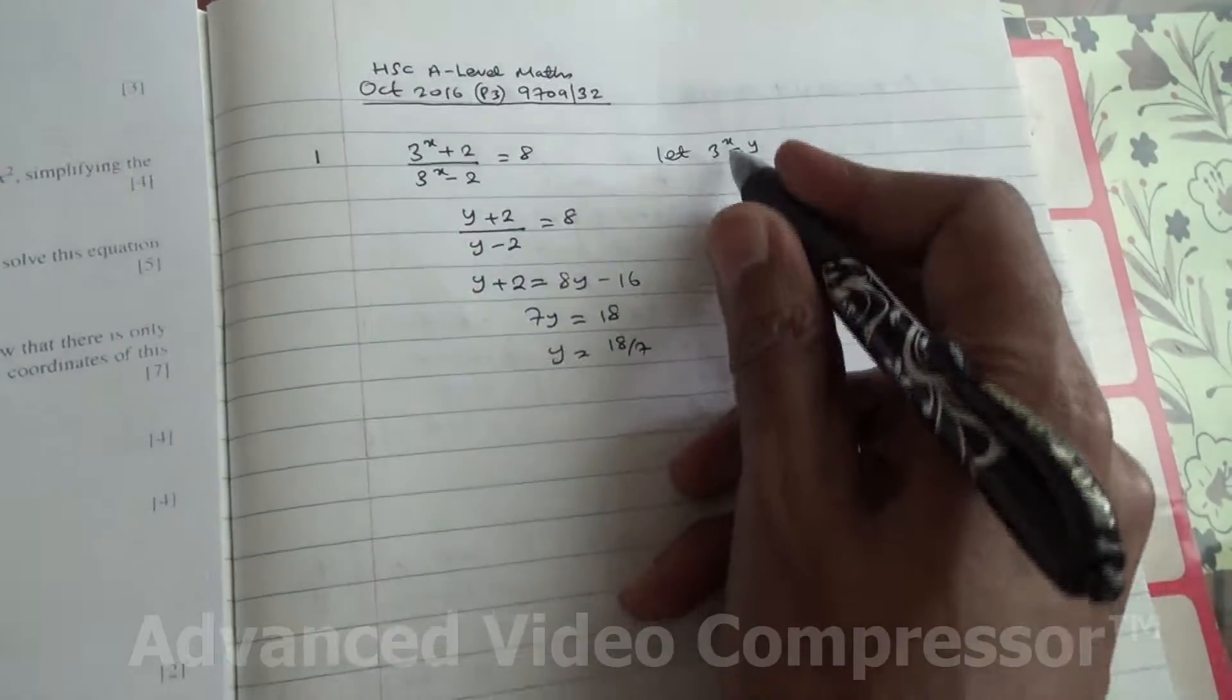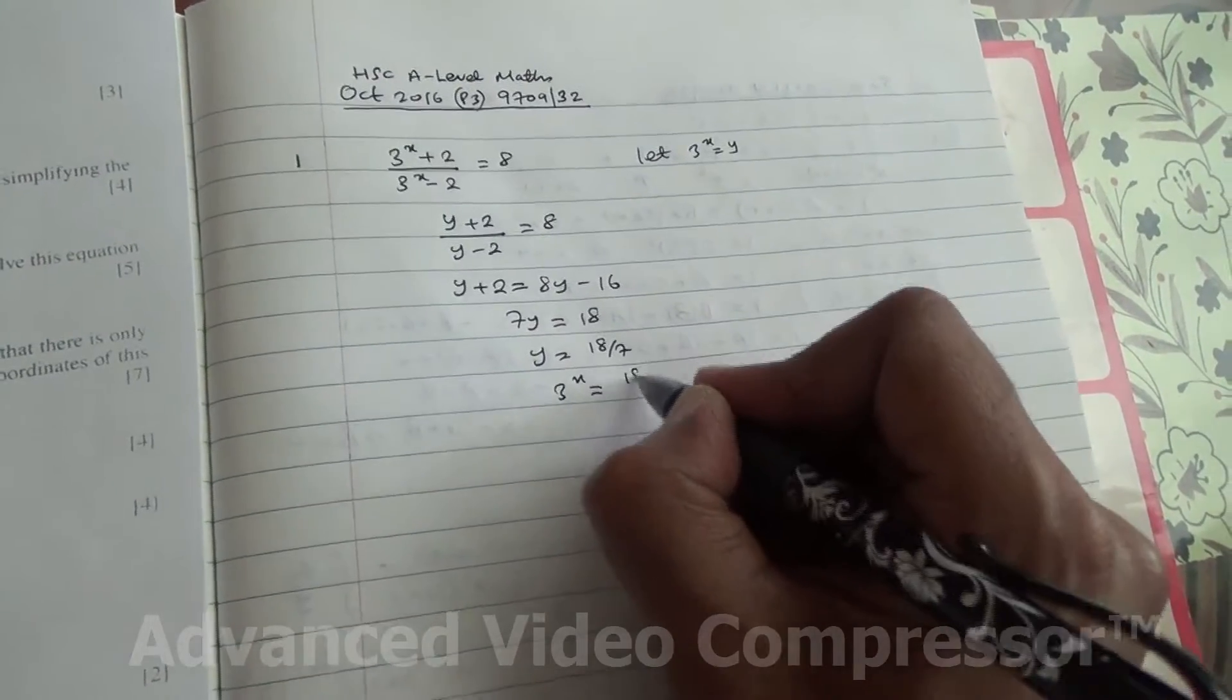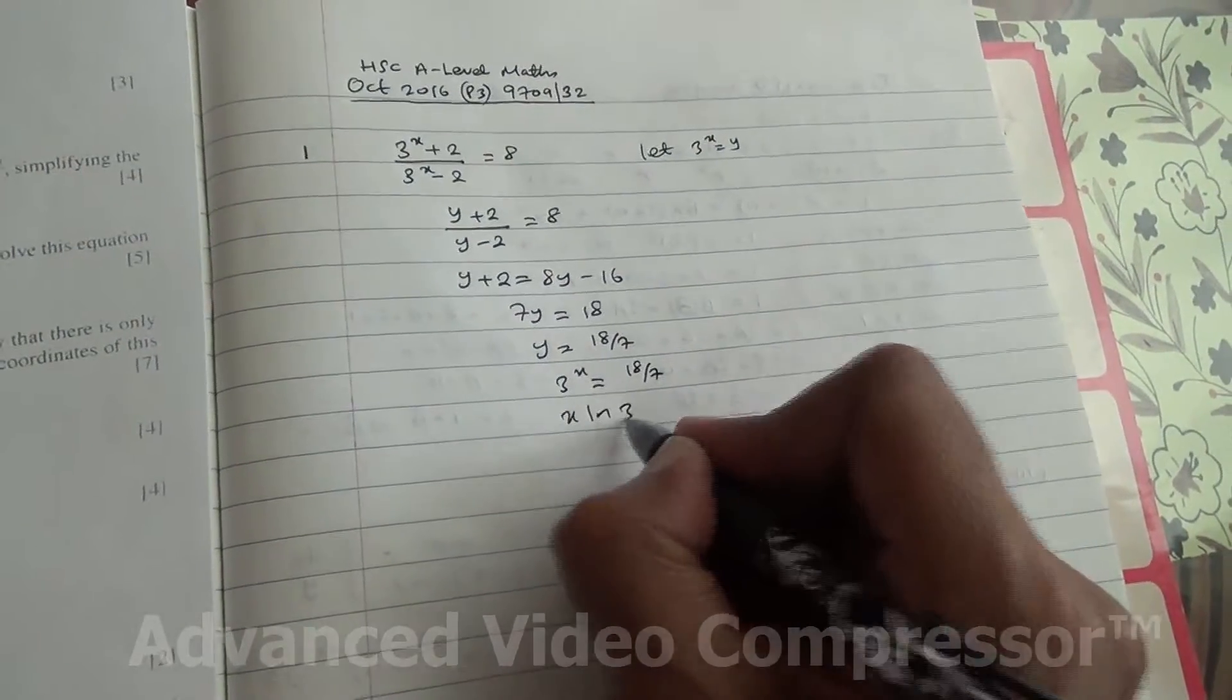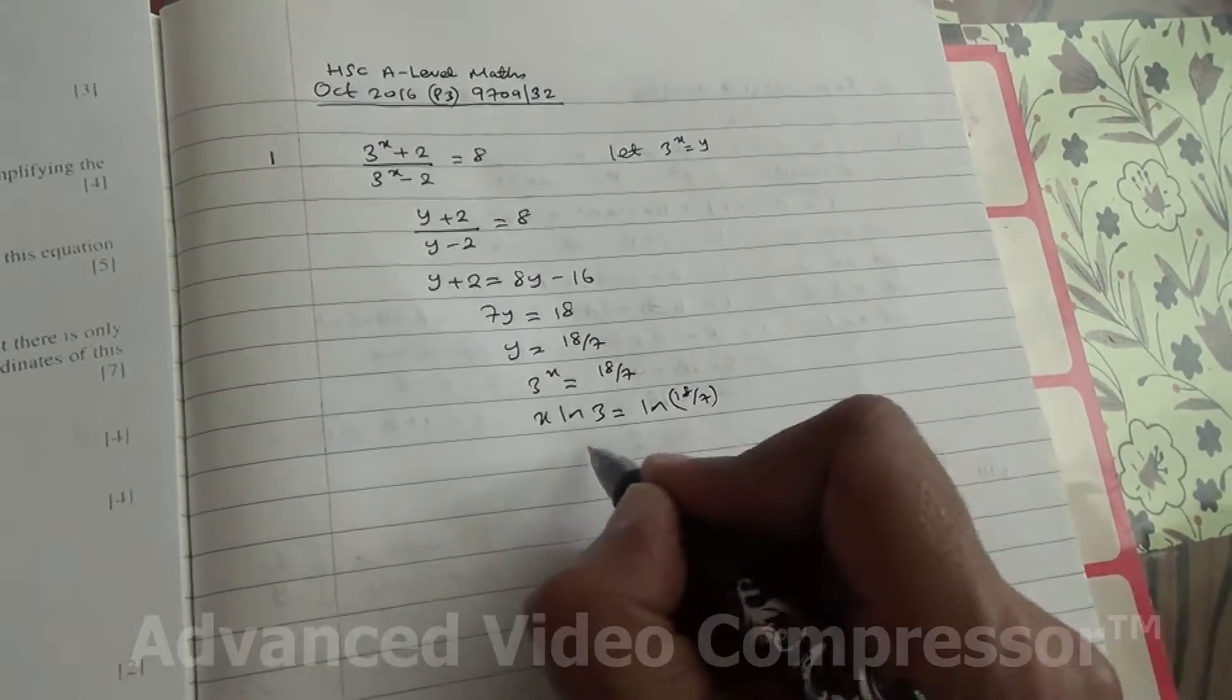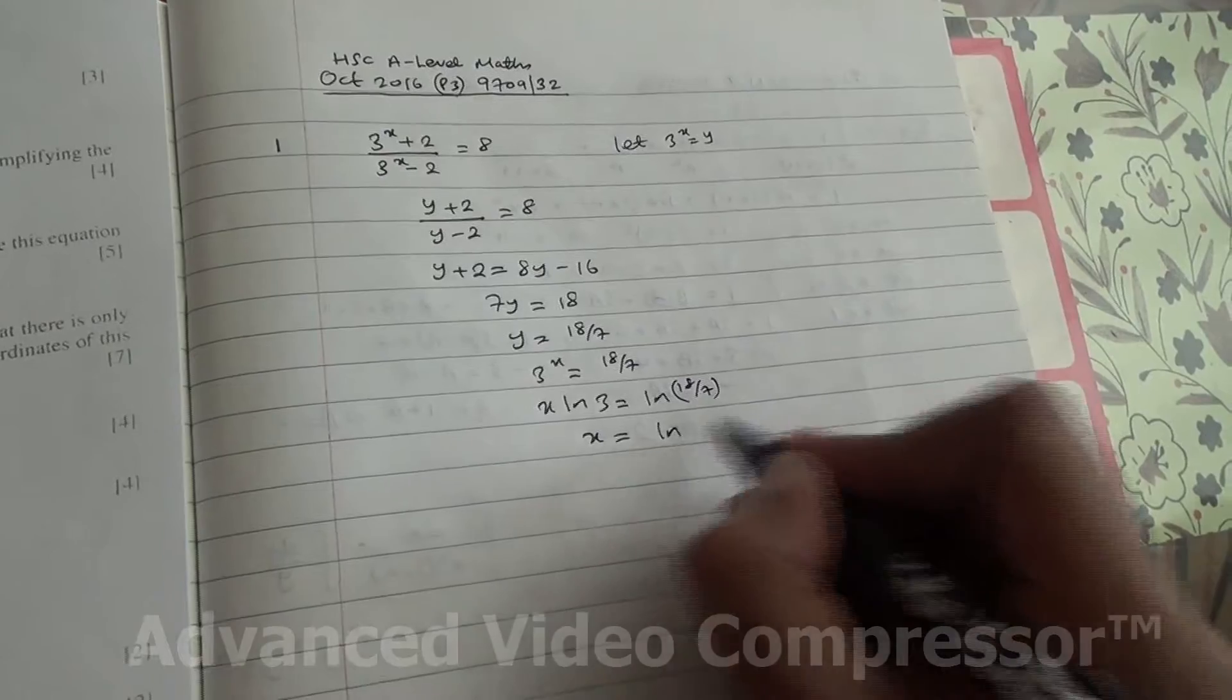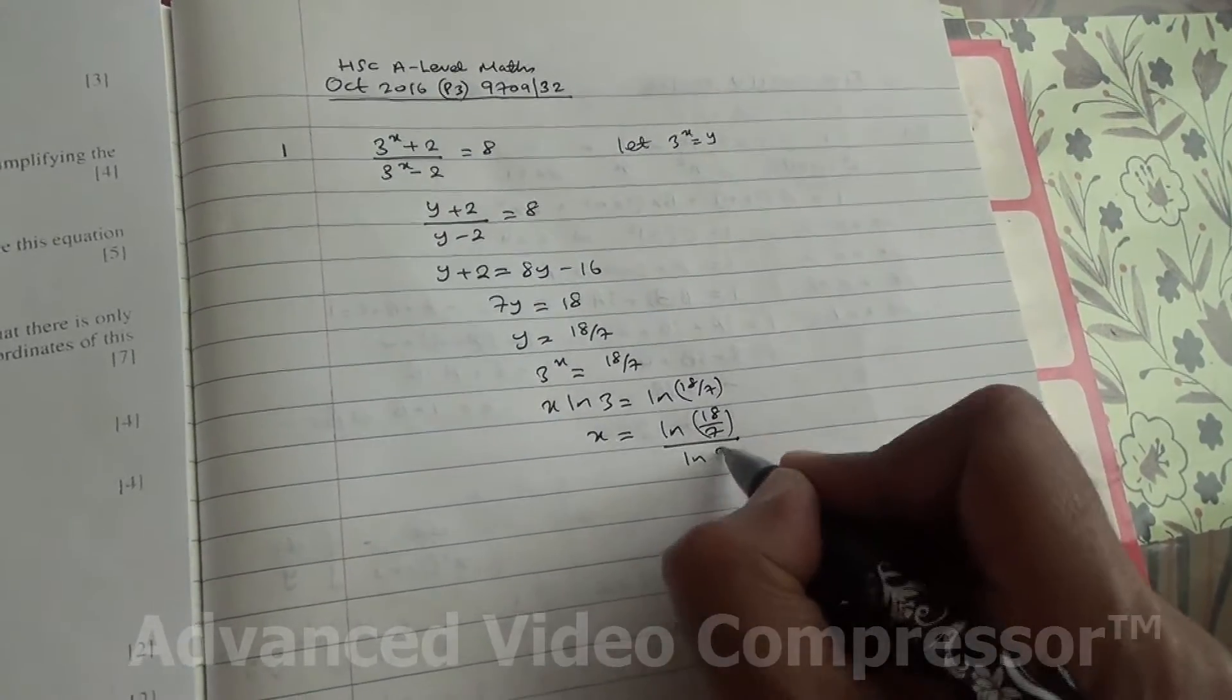y is 3 to the power of x. So 3 to the power of x is equal to 18 over 7. So x ln 3 is going to be ln 18 over 7. And we have x is equal to ln 18 over 7 divided by ln 3.